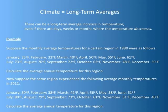What do we mean by long-term averages specifically? Even if we have a certain time where the temperature decreases, there could be an overall increase in temperature for the year. To calculate an average annual temperature for a particular region, you would add up the average temperatures for each month and then divide by 12. Go ahead and calculate the average temperature for the year in both 1980 and 2011.